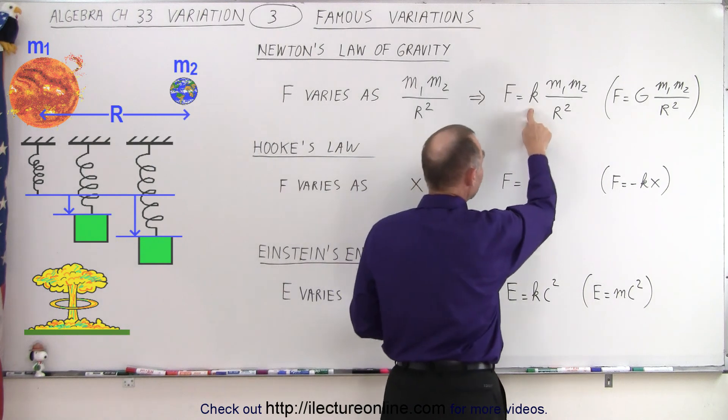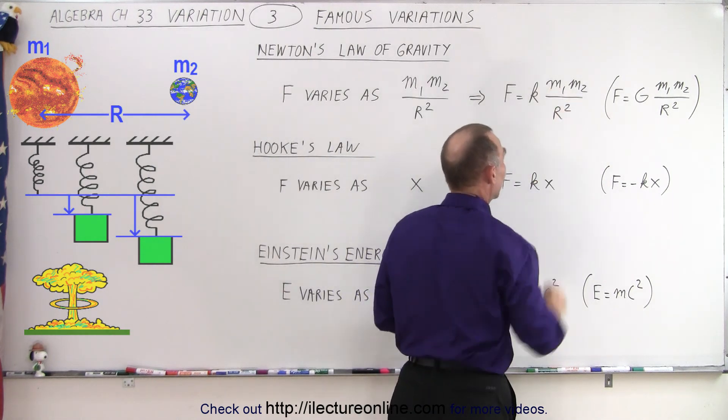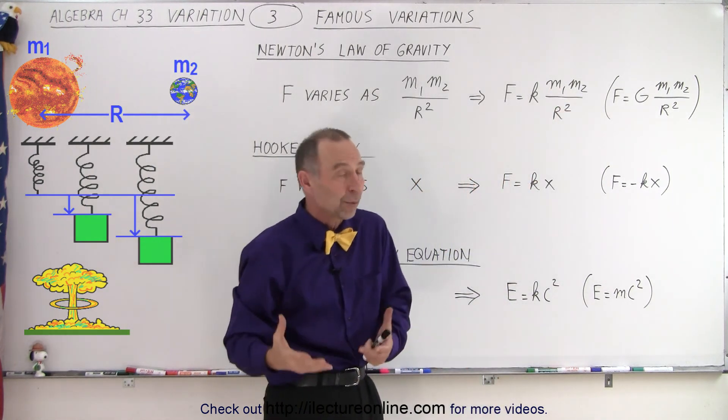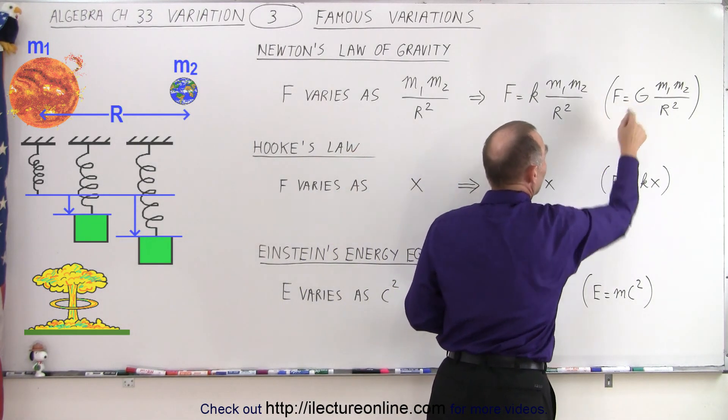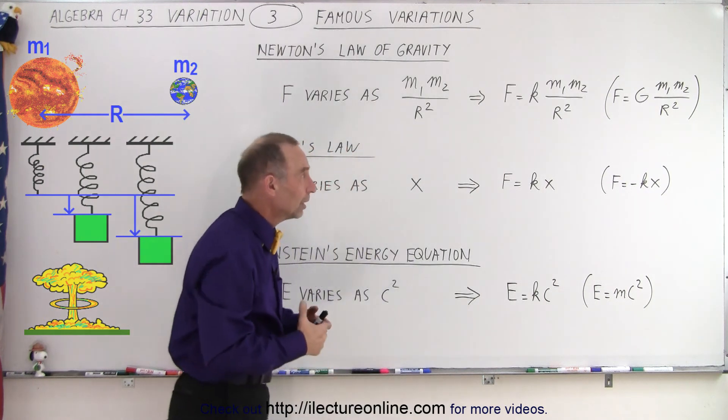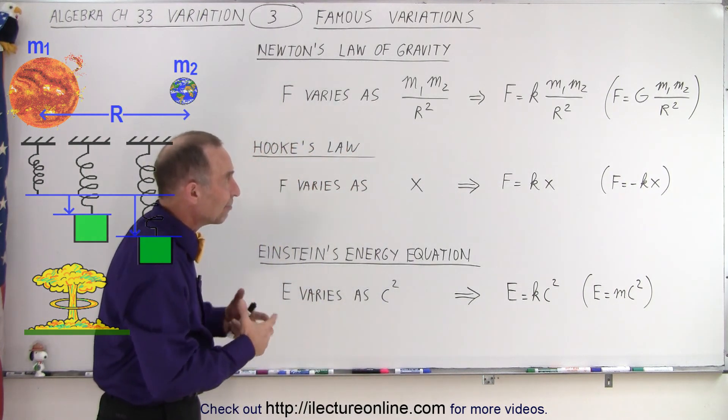So F equals K times the product of the masses divided by the distance squared. By now we realize this K is actually the universal gravitational constant. And that's where the equation, Newton's Law of Gravity, came from.